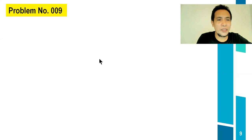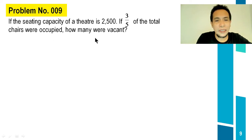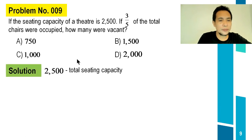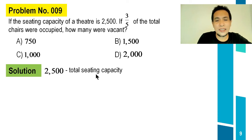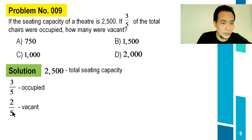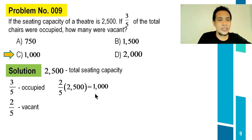Problem number 009: If the seating capacity of a theater is 2,500 and 3/5 of the total chairs were occupied, how many were vacant? Choices: A, 750; B, 1,500; C, 1,000; D, 2,000. For the solution, 3/5 of 2,500 are occupied, so 2/5 are vacant. Two-fifths of 2,500 equals 1,000. So the vacant seats equal 1,000, and the correct answer is letter C.